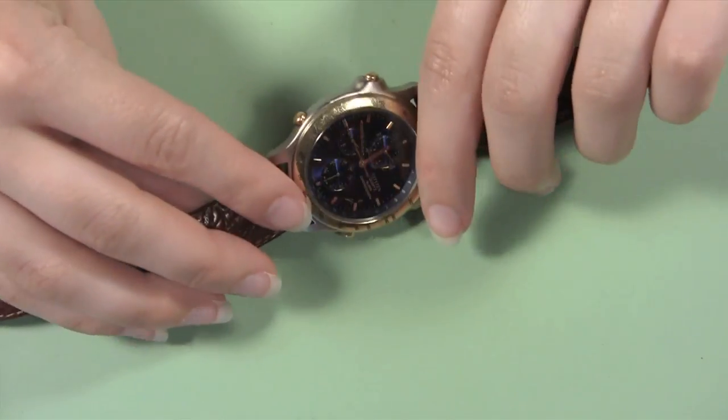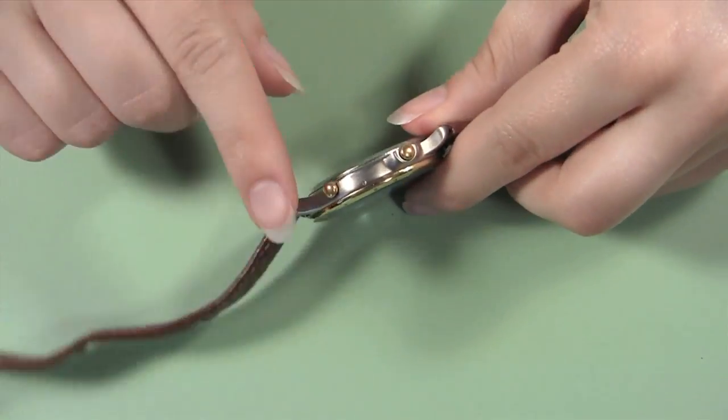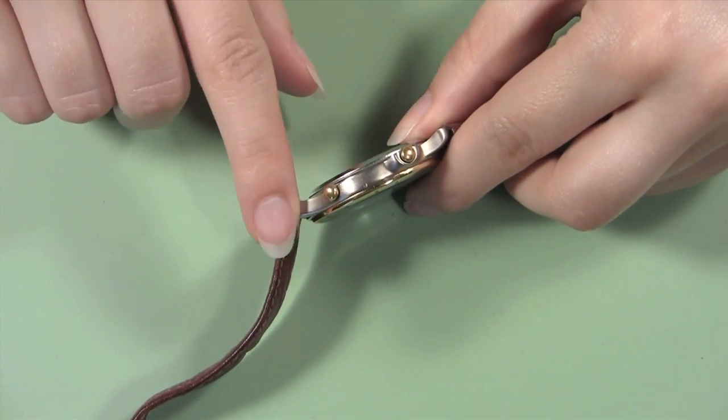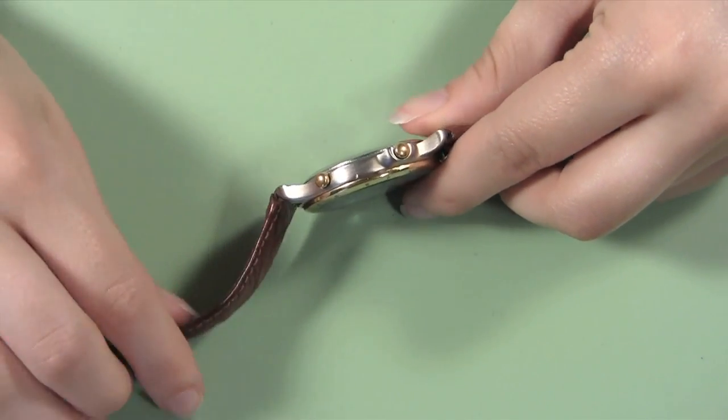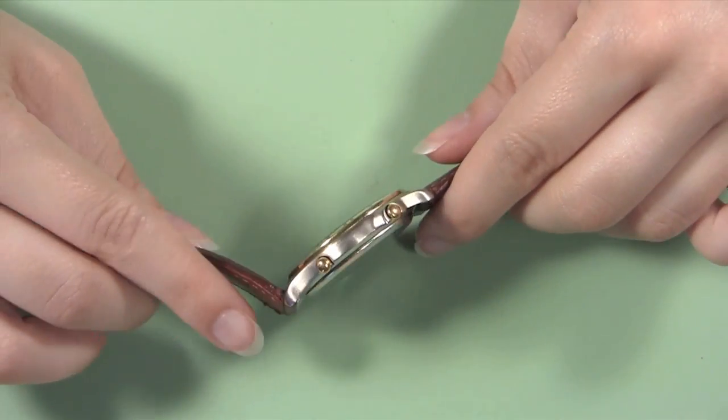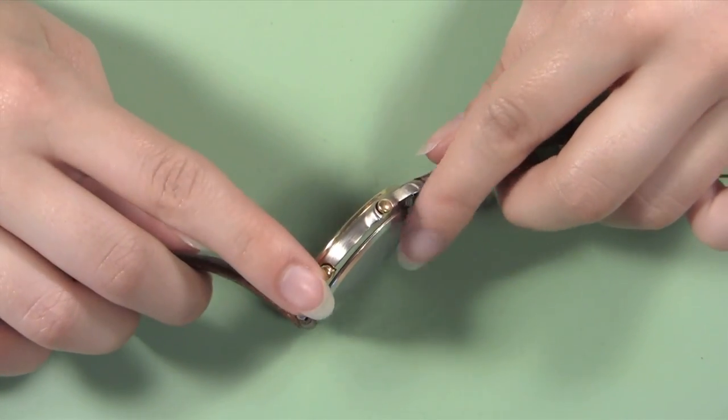How do you know if your watch case does or does not have holes? Check the watch lugs, the metal part that sticks out to hold the watch band. If it is smooth like this one, it does not have holes and you should follow these steps to remove your watch band.